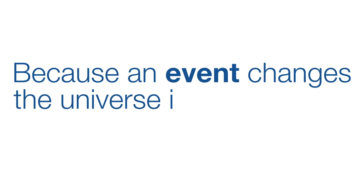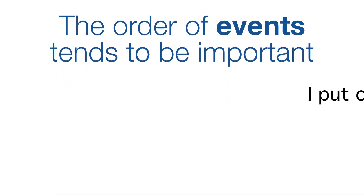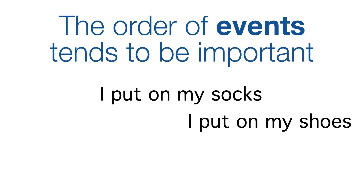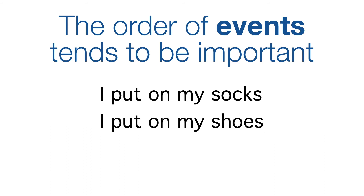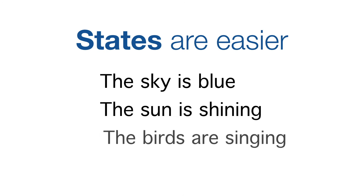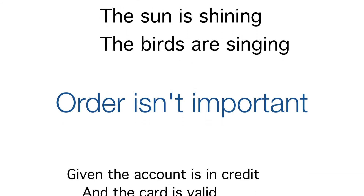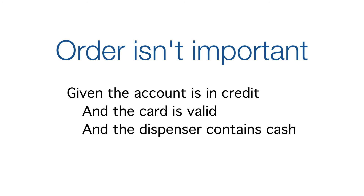The context is a list of things that must be true before we get started — descriptions of state rather than events. This is a hugely important distinction. Events are slippery characters. Because an event changes the universe in some way, the order of events tends to be important. I put on my socks, I put on my shoes — works. Whereas I put on my shoes, I put on my socks — doesn't. States are easier. The sky is blue, the sun is shining, the birds are singing — order isn't important. And the Given statements have the same property: those three statements could appear in any order.